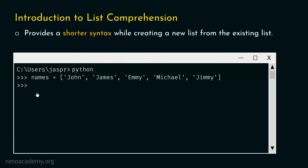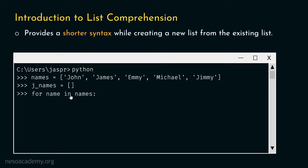For this, we will create an empty list called j_names. We want to store those three items in this list. We can use a for loop for this purpose. Let's type: for name in names. We want to iterate through all items of this list. Here, names refers to the list and we are storing each item inside the name variable one at a time.